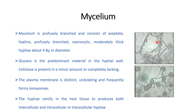After infection in the host tissue, the hyphae of this fungus produce both intercellular hyphae — present between two cells — and intracellular or transcellular hyphae, which penetrate and pass through the host cells. It is called transcellular because the hypha crosses one cell and enters another.